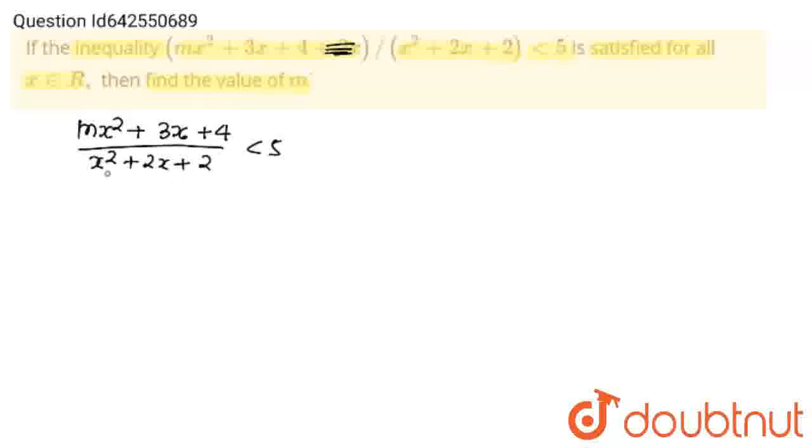See, this denominator is always positive. We can write x square plus 2x plus 2 as x plus 1 to the whole square plus 1, and this term is always positive. This is never going to be negative.